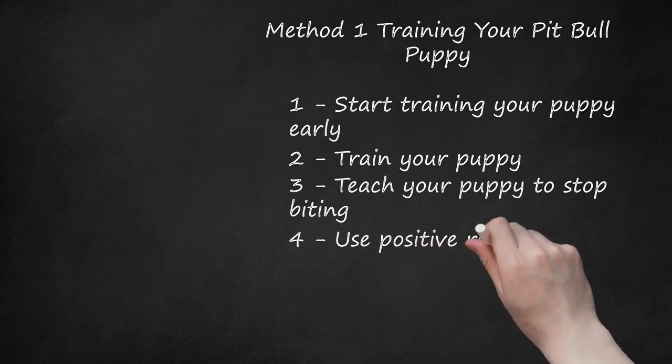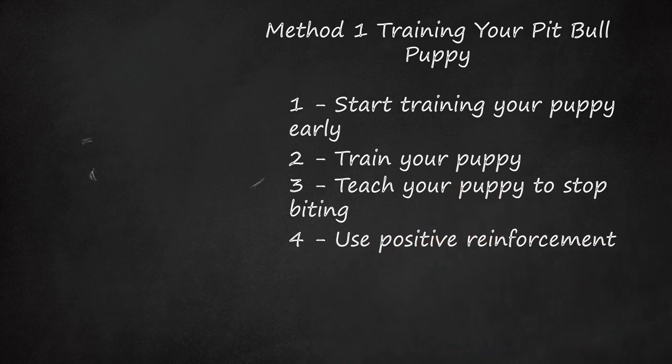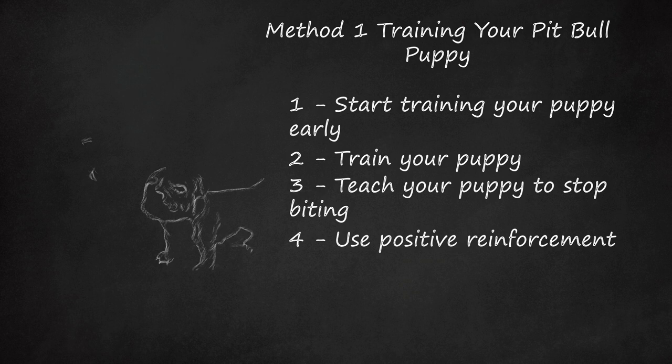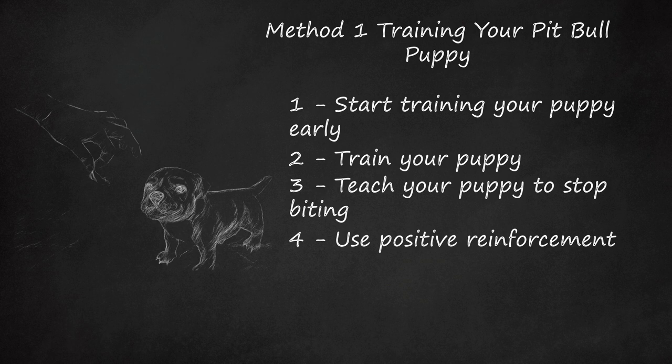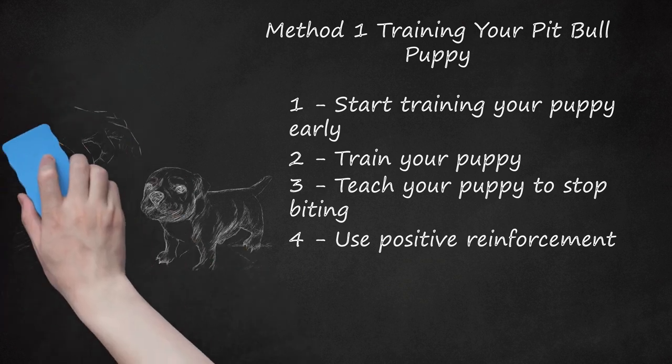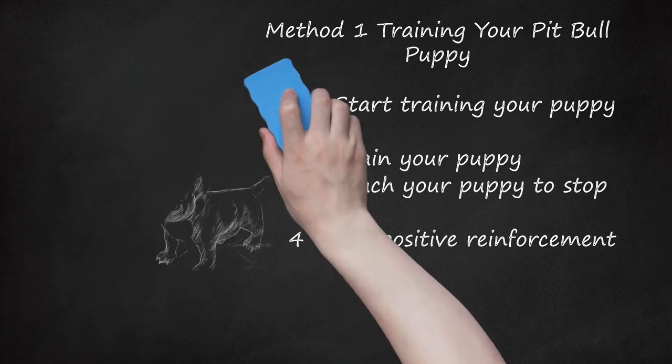Use positive reinforcement. When you're training, never get mad at your pit bull. Animals don't understand punishment and will instead learn to fear you. Puppies will make mistakes when learning new things, so be patient. You should always look for a reason to praise your puppy, even if only for small steps or achievements. For example, give your puppy a treat when he's calm instead of punishing him when he's being hyper.